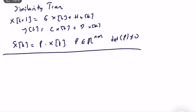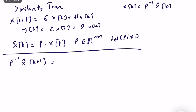Let's use this to come up with a new state definition. x(k) = P⁻¹·x̂(k). Substituting into the state evolution equation: P⁻¹·x̂(k+1) = G·P⁻¹·x̂(k) + H·u(k).